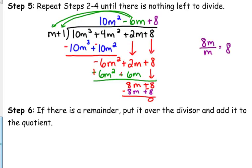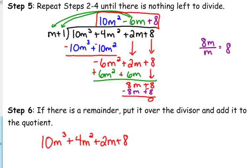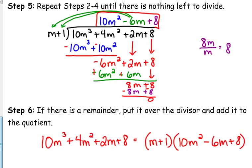We have no remainder on this one, so our quotient by itself is the answer. If there's no remainder, that means that that term is a factor. So we can rewrite that polynomial as m plus 1 times 10m squared minus 6m plus 8. If we use the multiplication of a binomial by a trinomial, we'd get that original polynomial. That is one way we can factor this polynomial, but the answer to the division question is what's boxed up here.